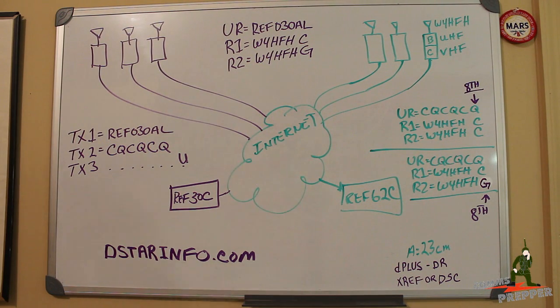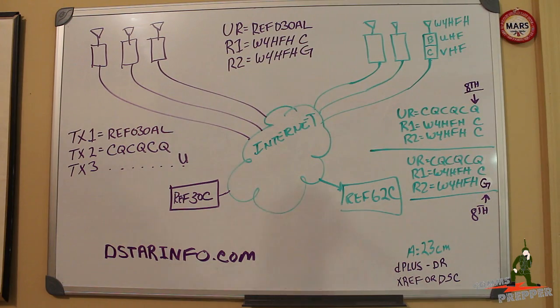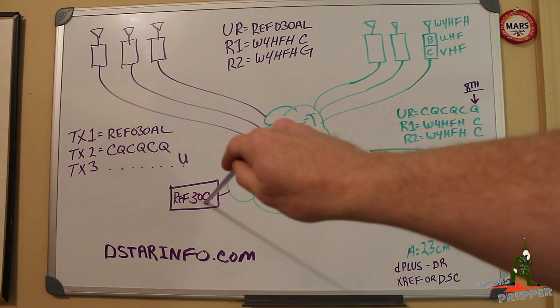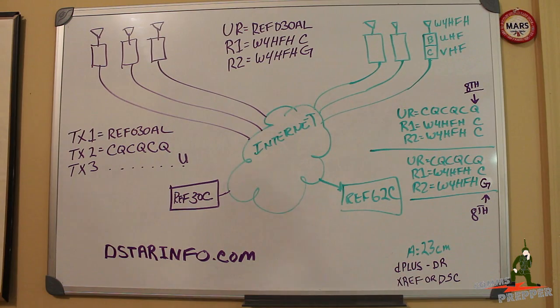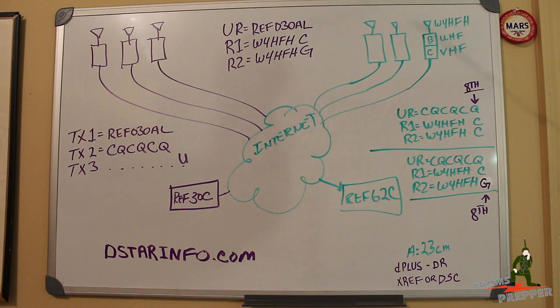Then I'm going to go into the radios menu and change this UR line to CQCQCQ because now the link is set up. Now I want to talk to anybody who's on these repeater resources out here. So my second transmission and subsequent transmissions during my contact or my QSO are going to have UR line CQCQCQ. And I'll get routed through the system. Now I'll come up through here. I'll be routed to this reflector. So anything connected to this reflector will hear my transmissions from this location. Now mind you, this site's on the other side of the country.